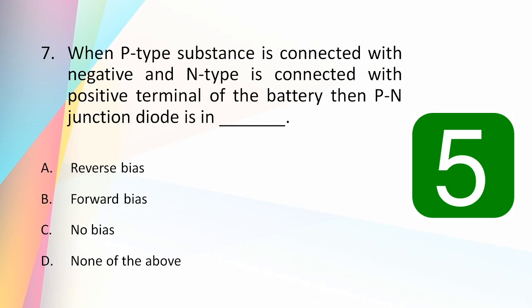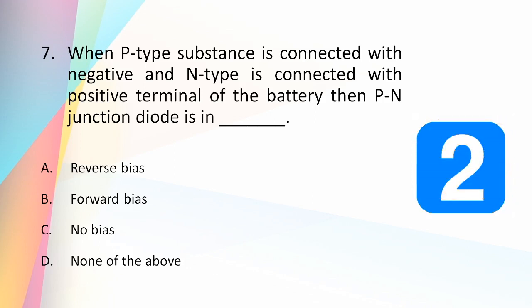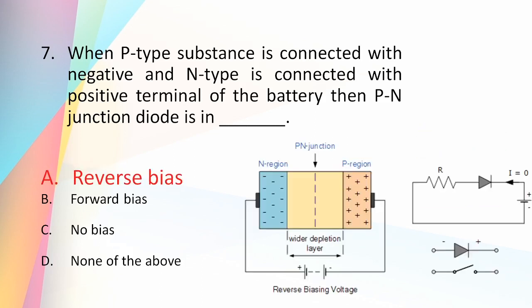When the P-type is connected to the negative terminal and the N-type to the positive terminal of the battery, the PN junction diode is in reverse bias. In reverse bias, the holes and electrons are attracted to the battery terminals, making the depletion region very large, acting as an open switch with no conduction.